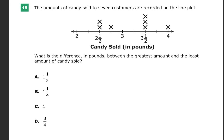The amount of candy sold to 7 customers are recorded on the line plot. And here's the candy sold. What this means, each one of the X's here represent a price, so I have a 2 1⁄2, a 2 1⁄2. This is pounds of it. I need to figure out what this is, and then I'm going to have 3 1⁄2 and a 4.